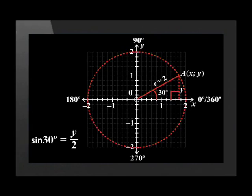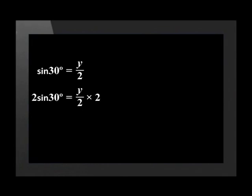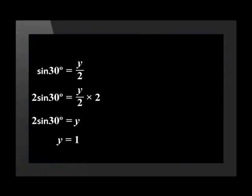Let's use the sine ratio to solve for y. Sine of 30 degrees equals y over 2. Multiply both sides by 2 and this leaves us with 2 sine 30 equals y. Using our calculator press 2 times sine 30 close brackets and equals. We find that y is equal to 1. Let's add this to the calculation.